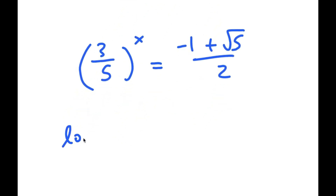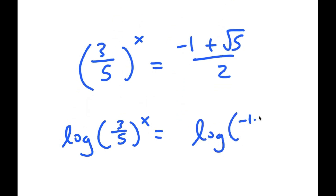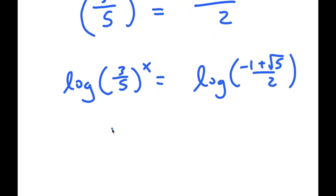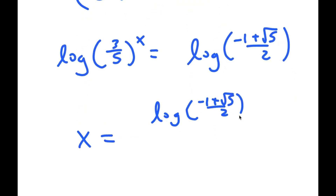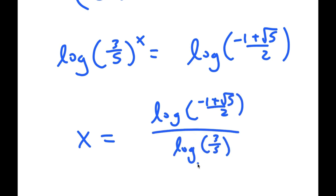From here, if I take the log on both sides, I get log of 3 over 5 to the power of x is equal to log of negative 1 plus the square root of 5, over 2. So I get x is equal to log of negative 1 plus the square root of 5, over 2, divided by log of 3 over 5. So this is my solution.